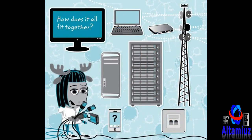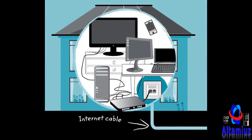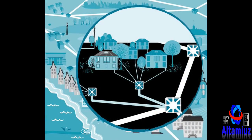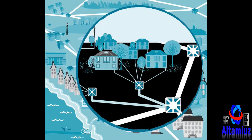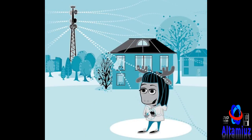But how does it all fit together? At home you might have a small network without wires, but it is still connected to the internet by a cable, an internet cable. You can also connect with a mobile without wires, and then signals are sent to and from your mobile through a mobile mast, which is then connected to an internet cable.